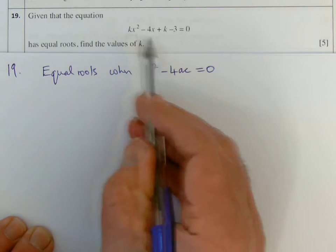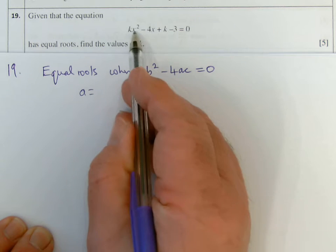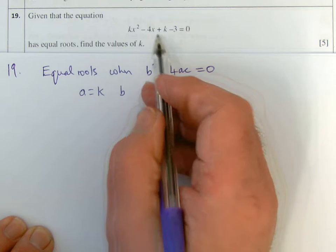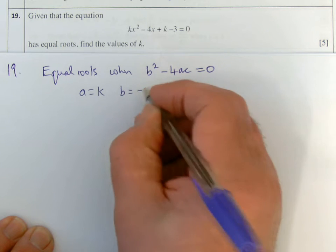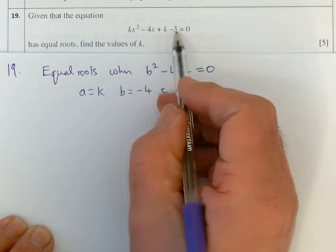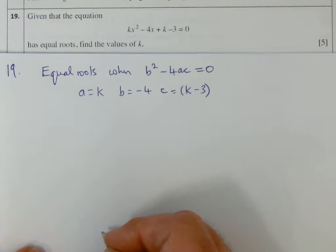So looking at the quadratic, identify a, b and c. a is what's in front of the x squared which is k. b is what's in front of the x which is minus 4. And c is what's left on the end. There's two terms here, k and minus 3. So I'll use a bracket because there's two terms. So c will be k minus 3.